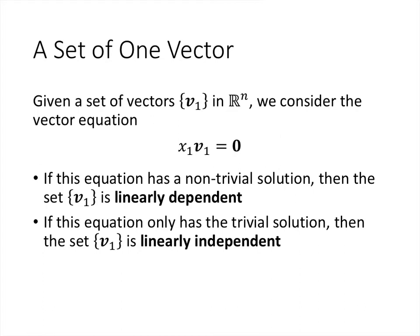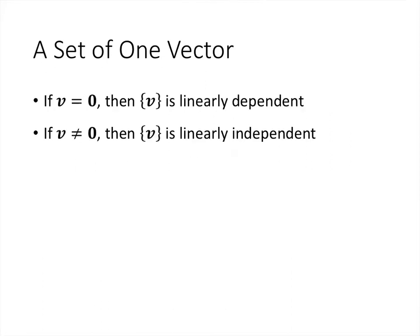But if the vector is not the zero vector, then any non-zero scalar multiplied by it won't give the zero vector. So when we have only one vector, telling whether the set is linearly dependent or independent is easy: if the vector is the zero vector, it's linearly dependent; if it's not the zero vector, it's linearly independent.